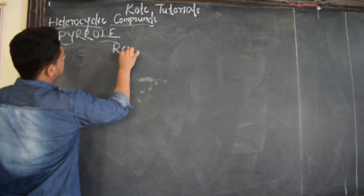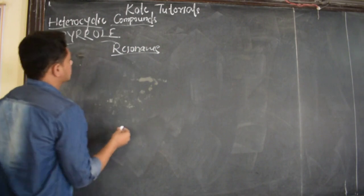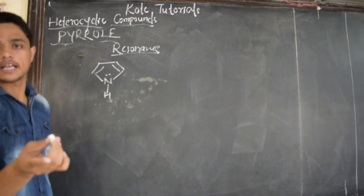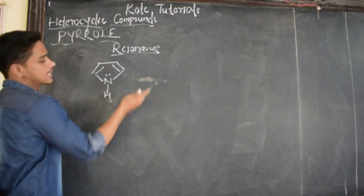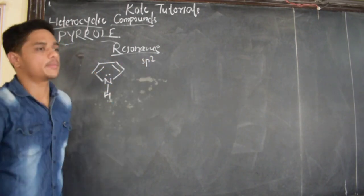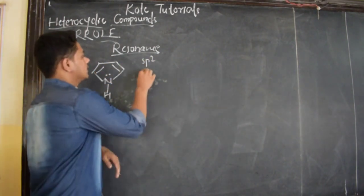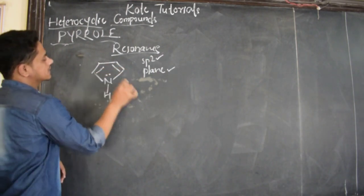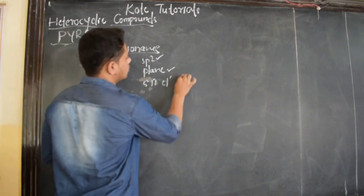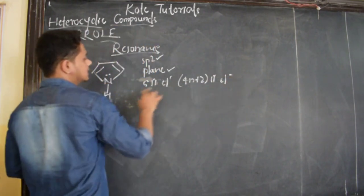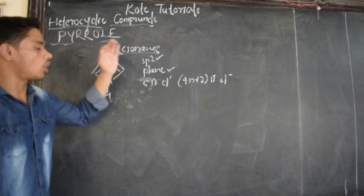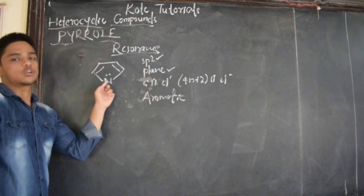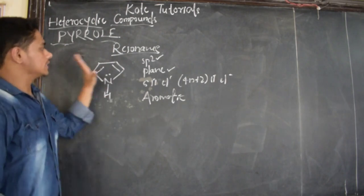Now we shall discuss the resonance structure of Pyrrole. First, about aromaticity: all atoms are sp2 hybridized and therefore in a single plane. There are a total of 6 pi electrons, which satisfies Hückel's rule of 4n+2 pi electrons (n=1). Since all are planar and sp2 hybridized, Pyrrole is aromatic. It is also heterocyclic because there is one heteroatom — nitrogen — in the ring.